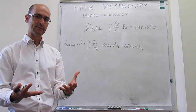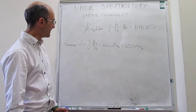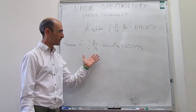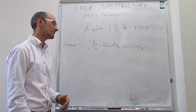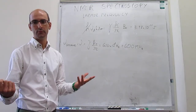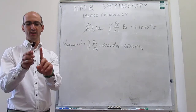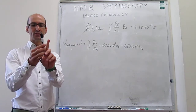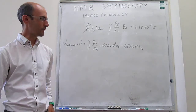Whenever you satisfy the resonance condition, you can excite the transition and obtain a peak in your spectrum. The frequency of precession is called the Larmor frequency.